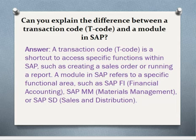Can you explain the difference between a transaction code (T-code) and a module in SAP? A transaction code is a shortcut to access specific functions within SAP, such as creating a sales order or running a report. A module in SAP refers to a specific functional area such as SAP FI (Financial Accounting), SAP MM (Materials Management) or SAP SD (Sales and Distribution).